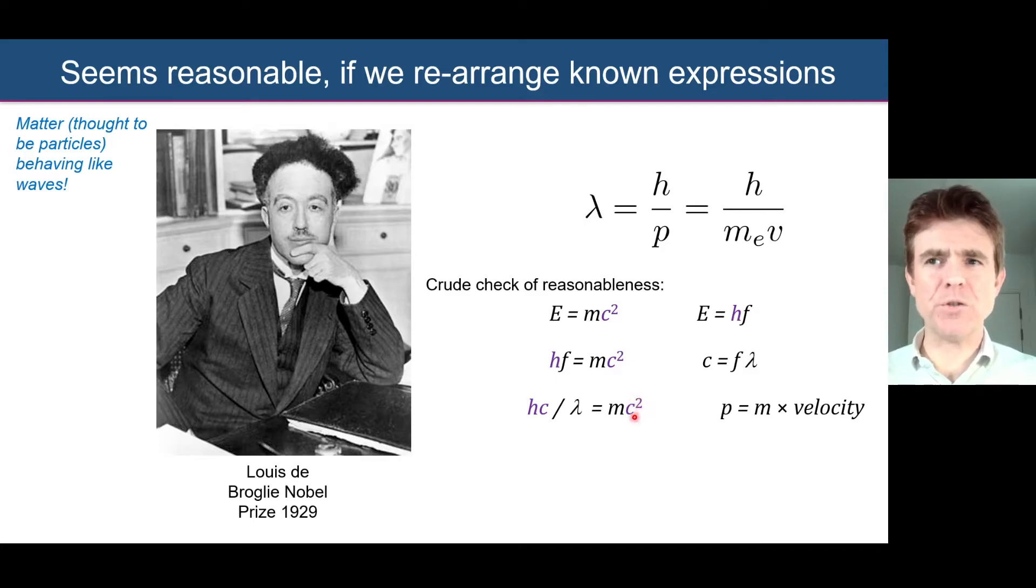Now we make an observation that momentum is mass times velocity. We can take one of the c's here from the c squared and say that's a velocity times a mass. We get hc over lambda is equal to p, which is mass times one of those velocities, leaving just one of the velocities c behind. So pc. That directly results in h over lambda equals p, which is the same as lambda equals h over p. This does seem, at least dimensionally, a reasonable thing to say.